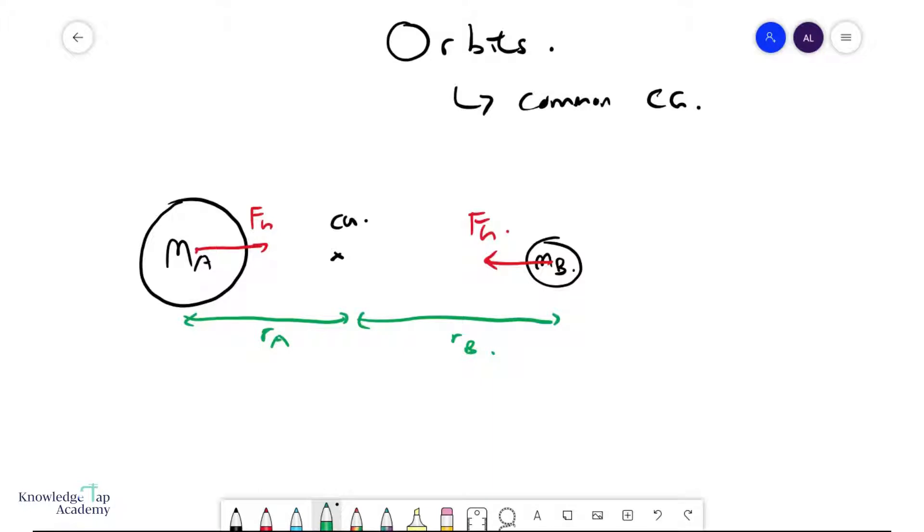And since the gravitational force is the only force that acts on these planets, and they are in circular motion, then we can say that the gravitational force fg must provide the centripetal force fc. And so they will orbit around this way. They'll go rotate around each other, or rather rotate around the common center of mass.